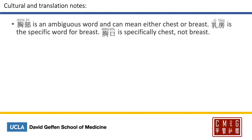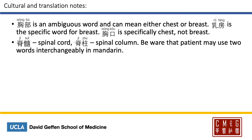Here are some terms that may cause some confusion. 胸部 is actually an ambiguous word — it can either mean the chest or the breast. To refer to the breast, it will be 乳房. To refer specifically to chest, it will be 胸口. To differentiate between the spinal cord and spinal column: the spinal cord is 脊髓, and the column 脊柱. Be aware that the patient might use these terms interchangeably, so always ask your patient what exactly they mean.